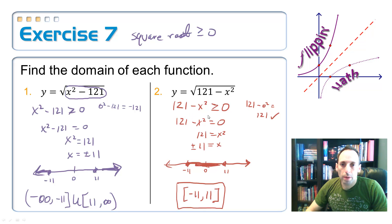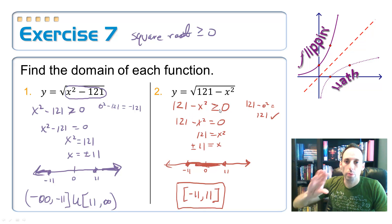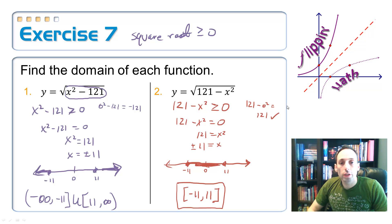But notice that the shortcut doesn't work this time because the x squared is negative. Well, if you were to multiply everything by a negative to make it positive again, that would flip the sign over and make it less than. Alternatively, you could use yourself a test value. I chose the origin, of course, zero, plug zero, and it makes it a true statement. So it's everything in between negative 11 and 11.